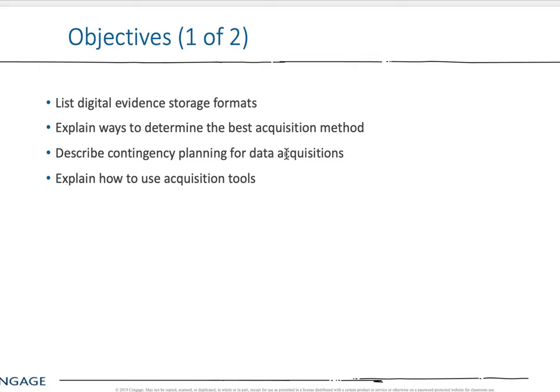Some of the objectives for this chapter: list digital evidence storage formats — there are several you should be familiar with. Explain ways to determine the best acquisition methods, so there's some reading on that. Describe contingency planning for data acquisitions — you always have to think a step ahead. And explain how to use acquisition tools. Our conversation over the last two weeks is really about planning.